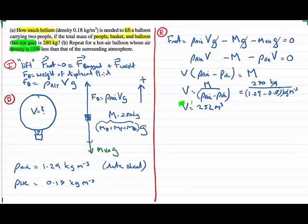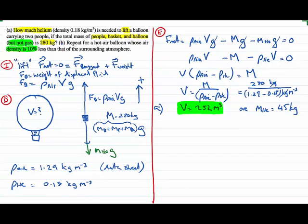So there's our answer: 252 meters cubed of helium. If I wanted to work out the mass of helium, I could take that volume and multiply it by the density of helium, which works out to be 45 kilograms. So that's our answer for part A: 252 meters cubed or 45 kilograms of helium.